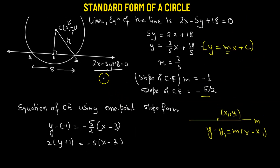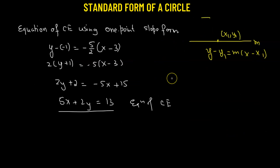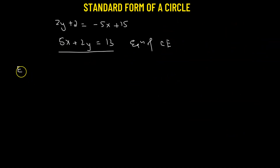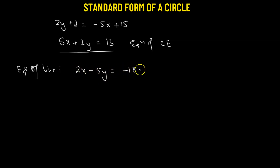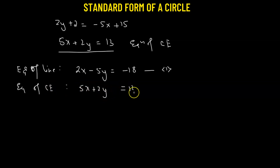Now that we have the equation of CE, we solve it simultaneously with the original line equation to find point E. Equation 1 is the original line: 2x minus 5y equals negative 18. Equation 2 is line CE: 5x plus 2y equals 13. We'll solve these using the elimination method followed by substitution.